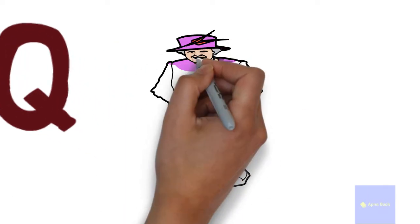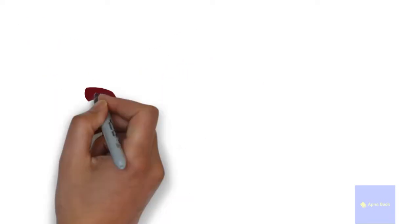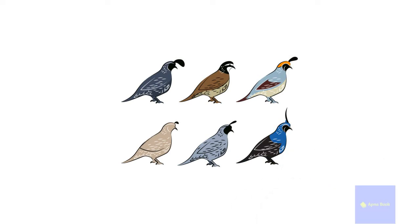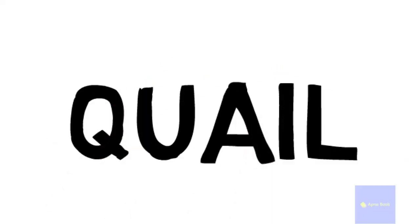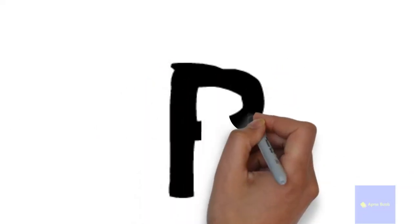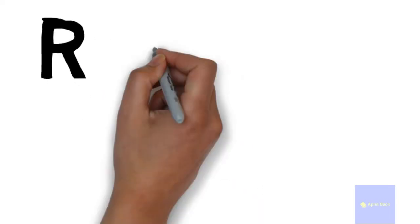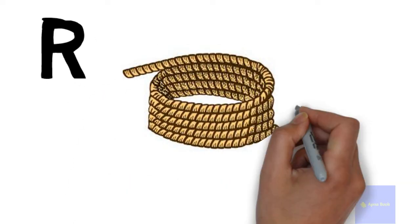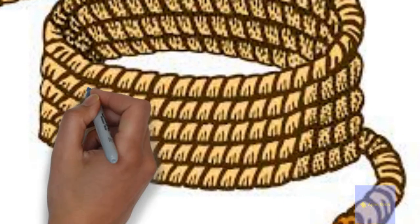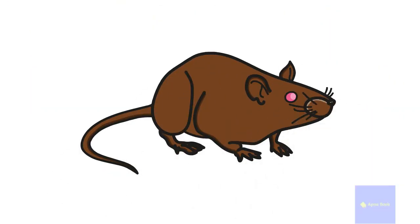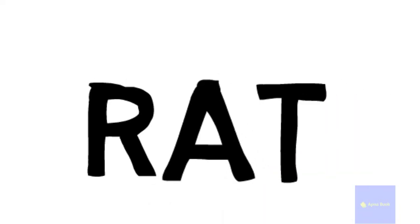Q for nut, Q for queen. Q for quill. R for rope, R for rat.